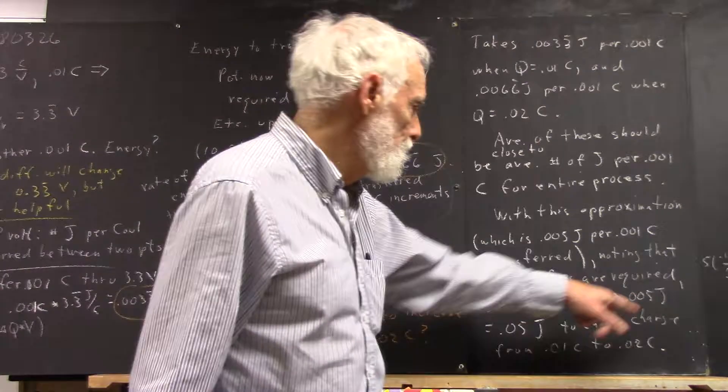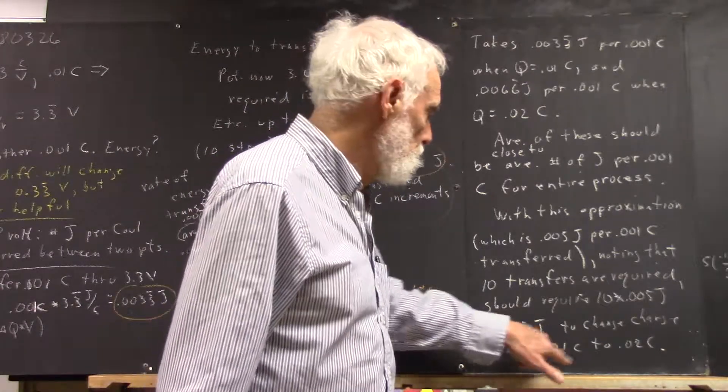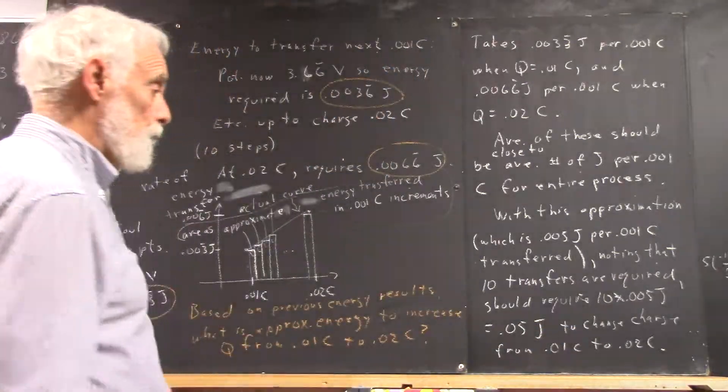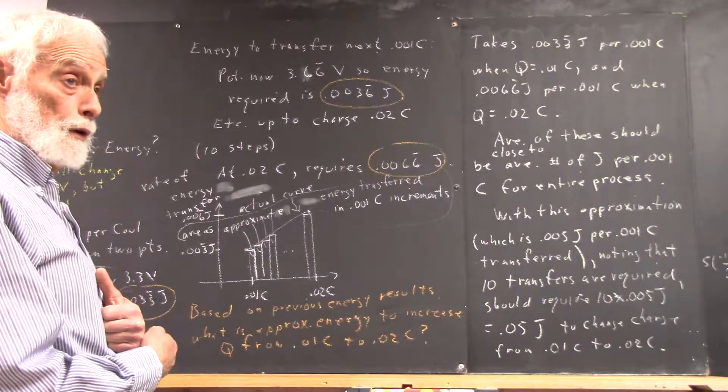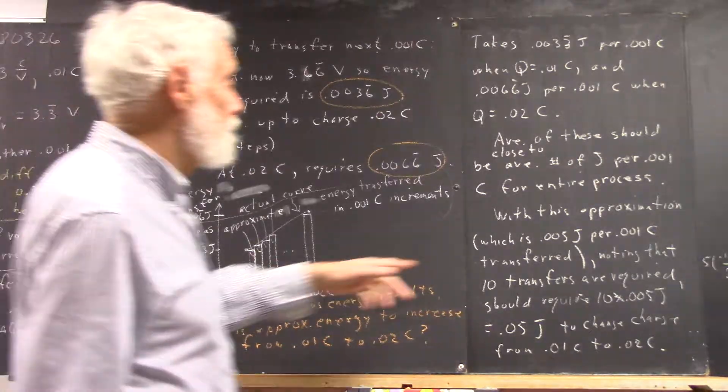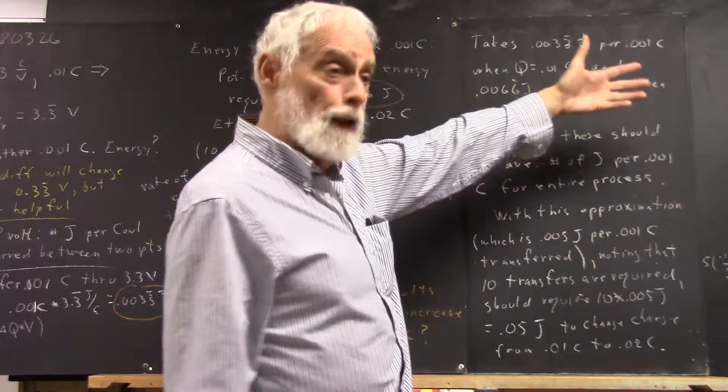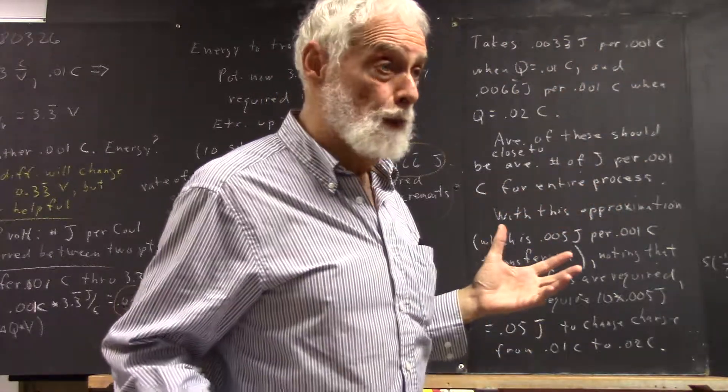So it should take 10 times that 0.05 joules to change the charge from 0.01 coulomb to 0.02 coulomb. Now, remember, this is an approximation. You can't just average the initial and final quantity and get the average of the quantity.